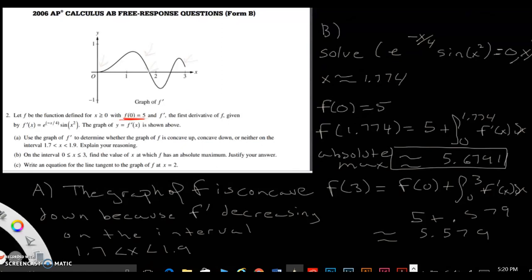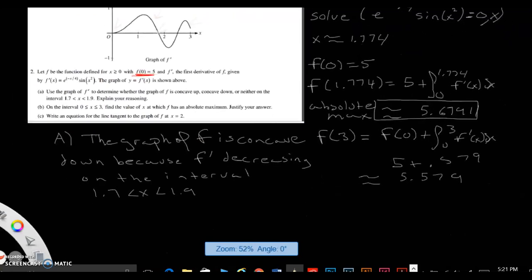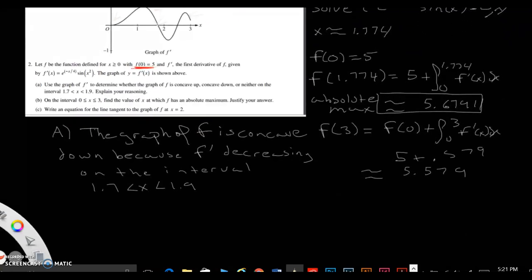Okay, the next one says write an equation for the line tangent to the graph of f at x equals 2. Okay, so that's pretty easy. So if you want to find a line tangent, you need two things. You need a point and you need a slope. So we need to find 2 comma something. How do we find the point?